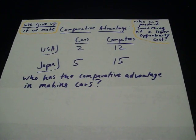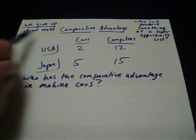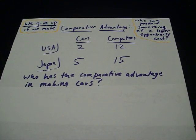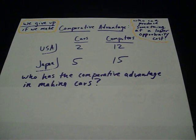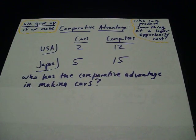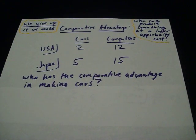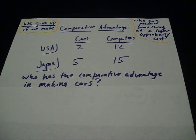Whatever product you're asked about, that's the 'if we make' part. The product that they give up producing is the 'we give up' part — that's the numerator in your fraction.